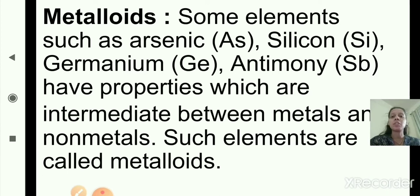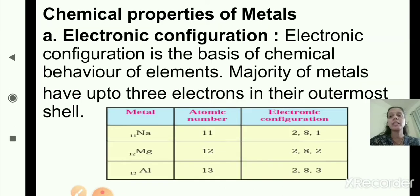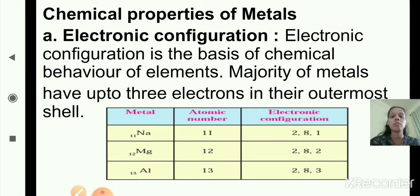In the previous part we studied metals and non-metals, and now we have covered metalloids. Next we will see the chemical properties of metals. The first chemical property is electronic configuration, which is the basis of chemical behavior of elements.